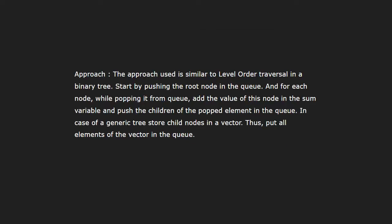Now let us see the approach. The approach is similar to level order traversal in a binary tree. We start by pushing the root node into the queue. For each node, while popping it from the queue, we add the value of this node to the sum variable and push the children of the popped element into the queue. In case of an n-ary tree, we store child nodes in a vector, so we put all elements of the vector into the queue.